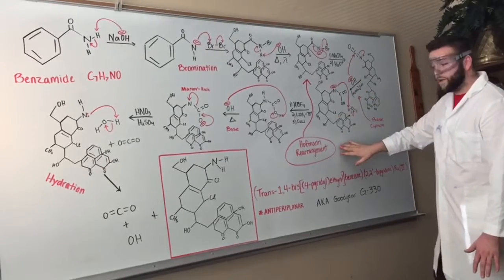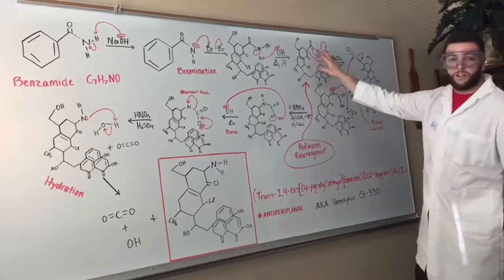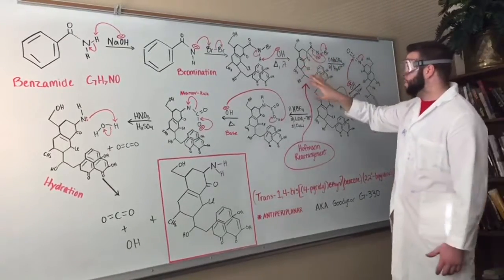This is called the Hoffman rearrangement. This is critical to this complex compound being formed. The nitrogen reattaches onto this complex structure right here.